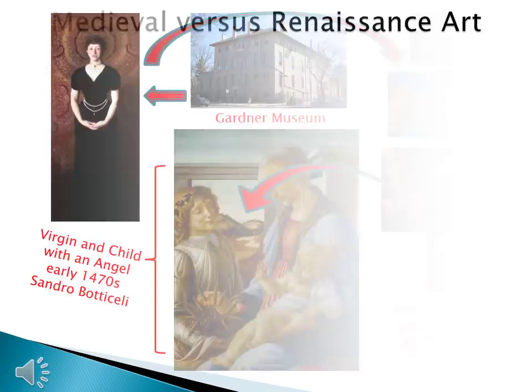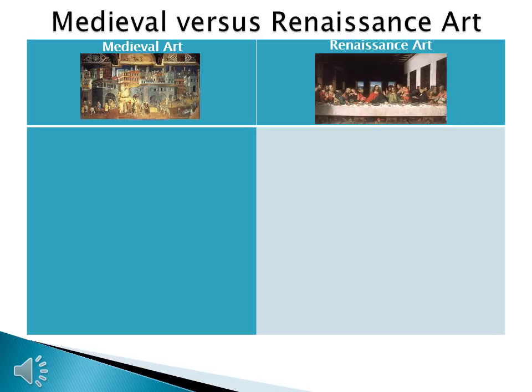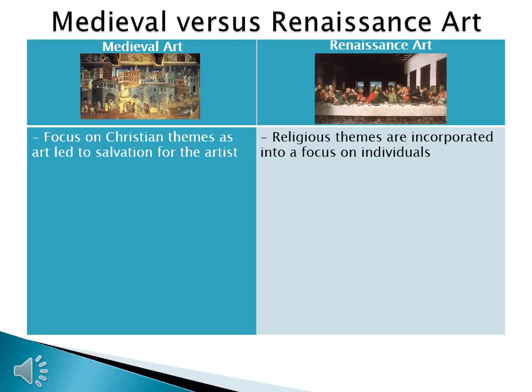The cool thing about the Renaissance isn't just that there's a rebirth in classical culture. Instead, this rebirth allows people to look at the world around them from a different perspective. The best way to see this is by comparing medieval art to Renaissance art. Medieval art has a focus on Christian themes, as art led to salvation for the artists — they're painting religious themes to get into heaven. With Renaissance art, religious themes are incorporated into a focus on individuals. We focus on the individual, not the religion. Medieval art has flat perspective and disproportionate size; things don't look quite right. In Renaissance art, we have a use of 3D perspective and vivid colors, trying to make it look as real as possible.